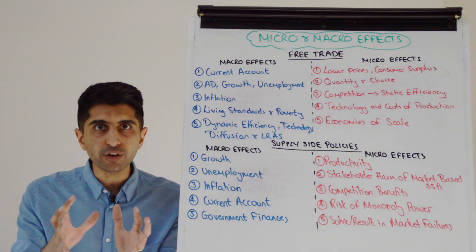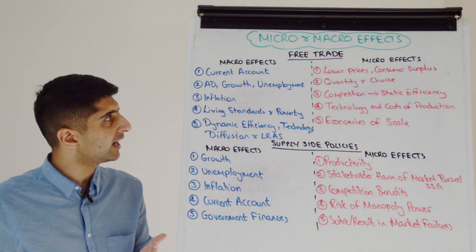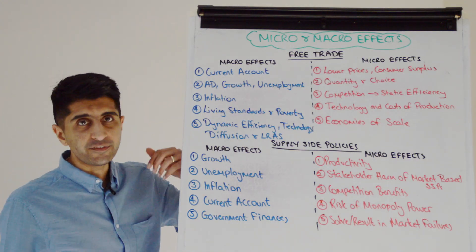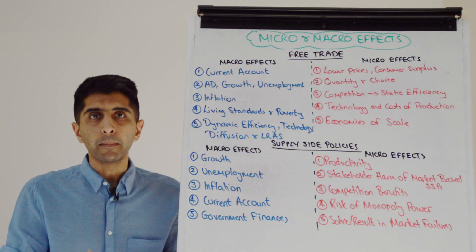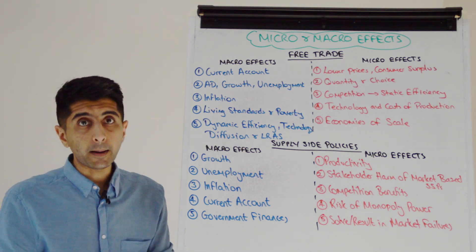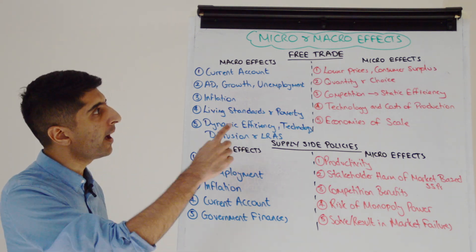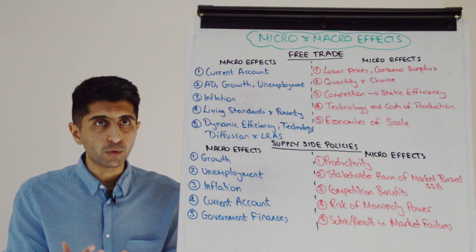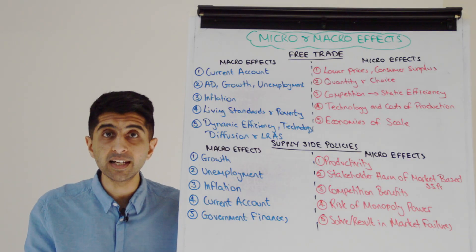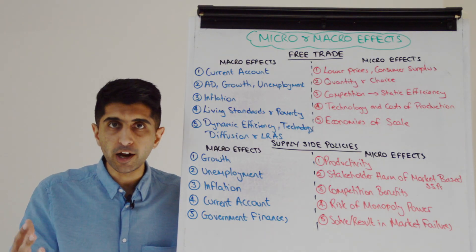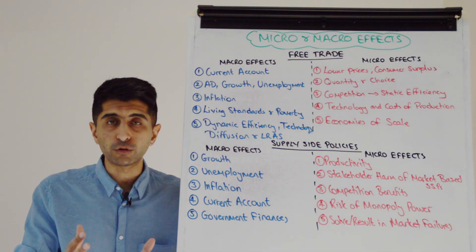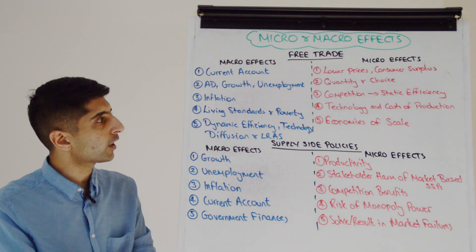Let's start by looking at free trade as the topic area. The macro effects of free trade are very clear. We can talk about comparative advantage exploitation and benefits of the current account if we can export, but also impacts on the current account if we lose comparative advantages in many areas. We can talk about boosts in AD, higher X minus N, higher economic growth, lower unemployment, potentially demand-pull inflation as well. We can talk about the impact on living standards and poverty alleviation from higher growth and higher incomes. Think about your East and Southeast Asian countries, which are very export dominant for growth and development. You can think about your Eurozone countries as well.